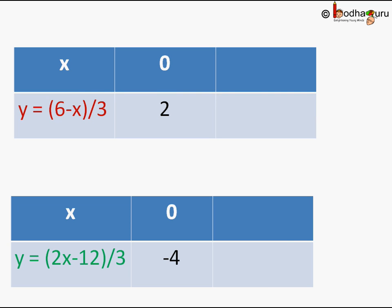For the second equation y equal to 2x minus 12 by 3, x equal to 0. So y will be 0 minus 12 by 3, which is minus 12 by 3, which is equal to minus 4. So we got one point for this equation also.